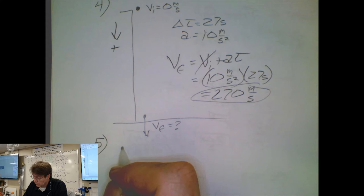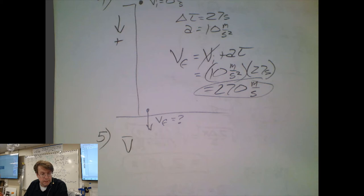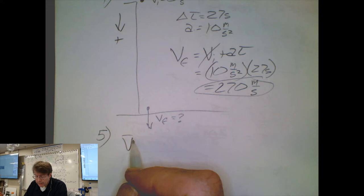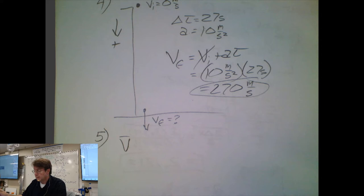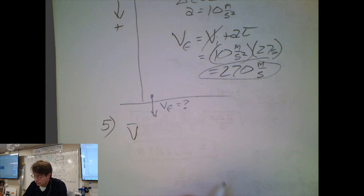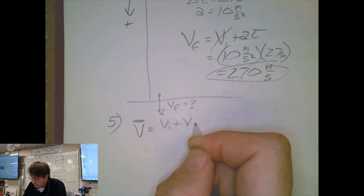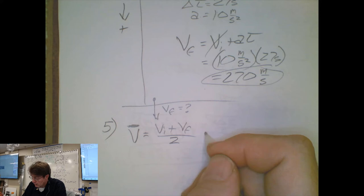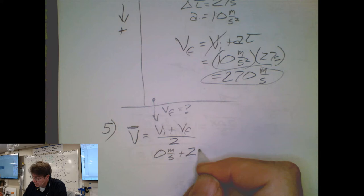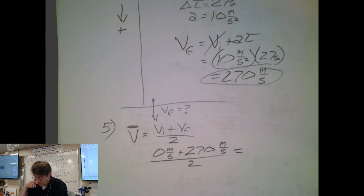Problem five asks for average speed during the 27-second interval. Average velocity, denoted by a bar above v, equals initial plus final velocity divided by two. Plugging in vi of zero plus vf of 270, divided by two, gives an average of 135 meters per second.